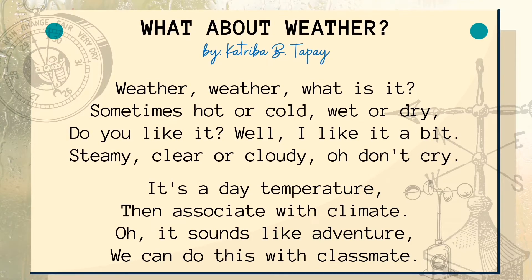I have here a poem. Listen as I read it to you, then answer the guided question afterwards. 'What About Weather' by Katrina B. Tapat: Weather, weather, what is it? Sometimes hot or cold, wet or dry. Do you like it? Well, I like it a bit — steamy, clear or cloudy. Oh, don't cry. It's a day temperature then associate with climate. Oh, it sounds like adventure, we can do this with classmate. So according to the poem, what is weather? Weather is sometimes hot or cold, wet or dry, steamy, clear or cloudy. And who can you be with for adventure? With a classmate.